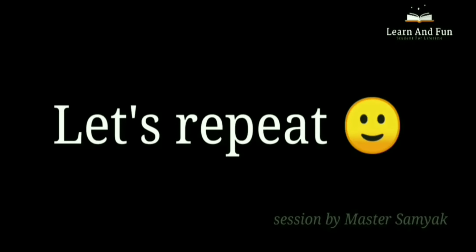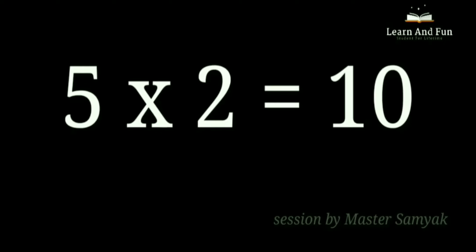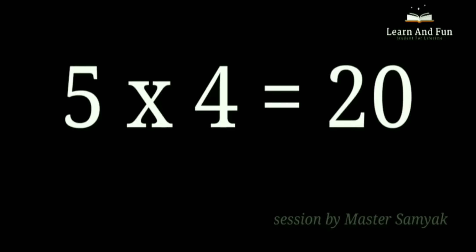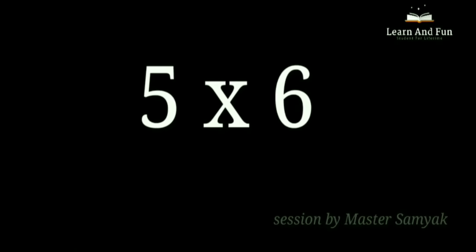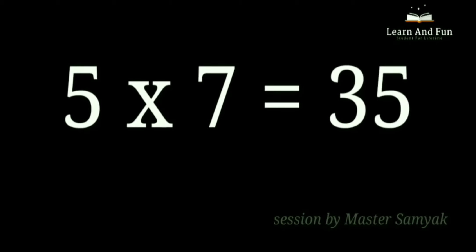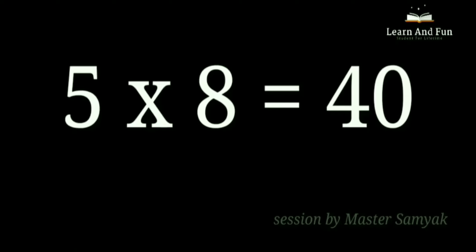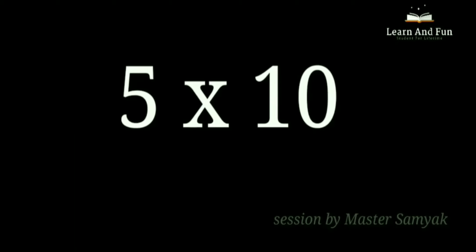Let's repeat. 5 ones are 5. 5 twos are 10. 5 threes are 15. 5 fours are 20. 5 fives are 25. 5 sixes are 30. 5 sevens are 35. 5 eights are 40. 5 nines are 45. 5 tens are 50.